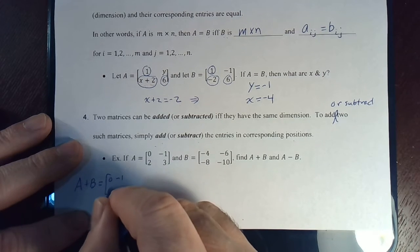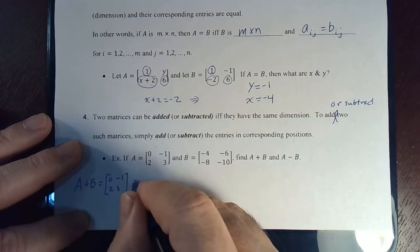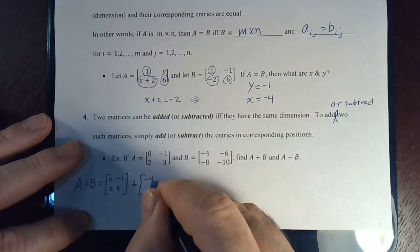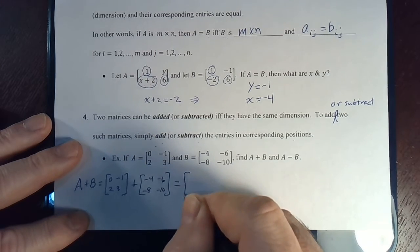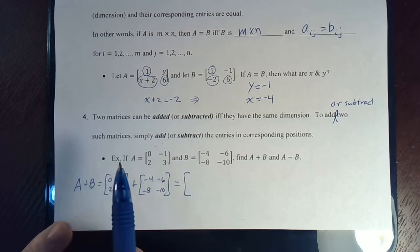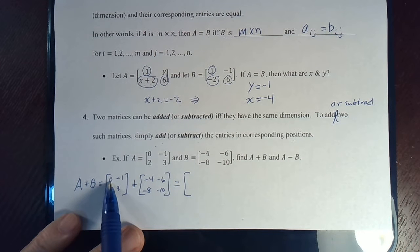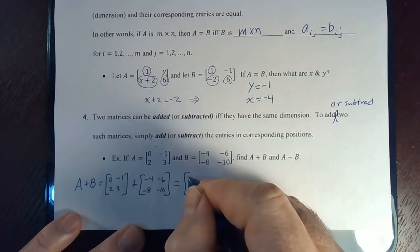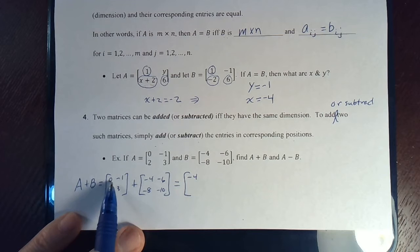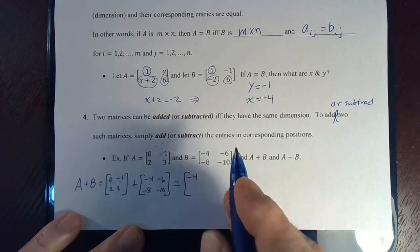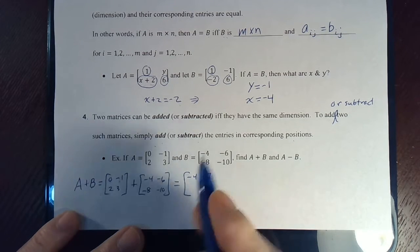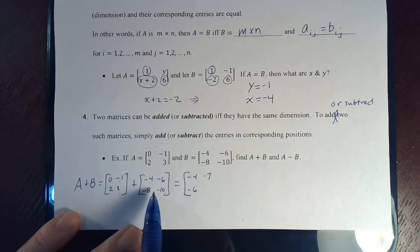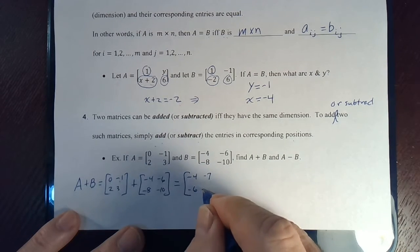0, negative 1, 2, 3, plus, and then B is negative 4, negative 6, negative 8, negative 10. So, when we add them together, we just do corresponding terms. The 1, 1 entry, meaning row 1, column 1, it's this one, plus negative 4 gives us negative 4. Row 1, column 2, negative 1, negative 6 gives us negative 7. 2 and negative 8 gives us negative 6. And 3 and negative 10 gives us negative 7.